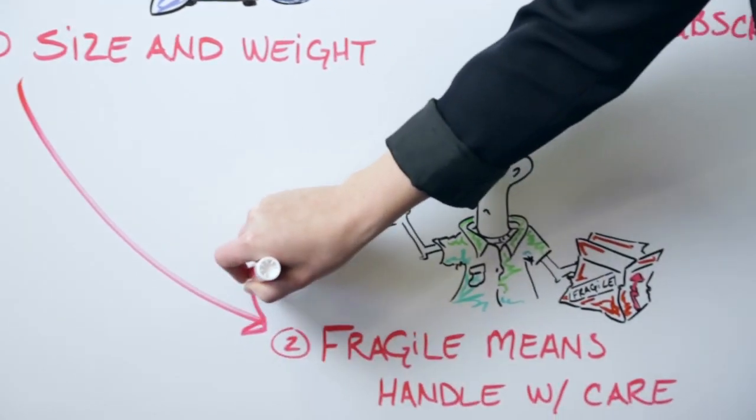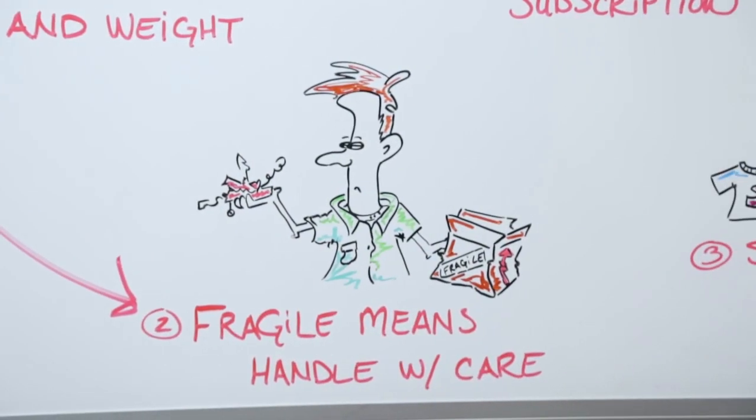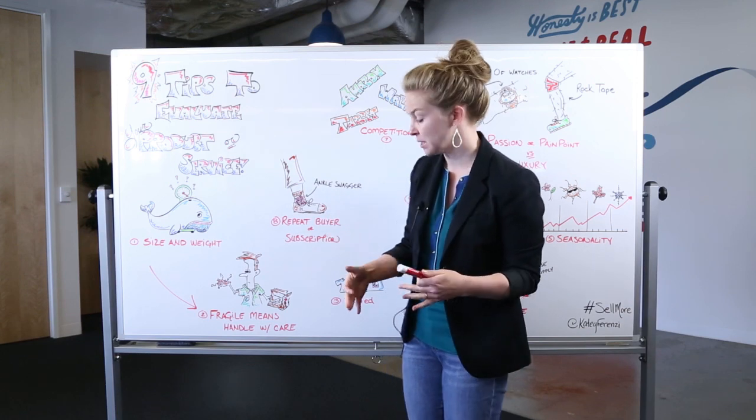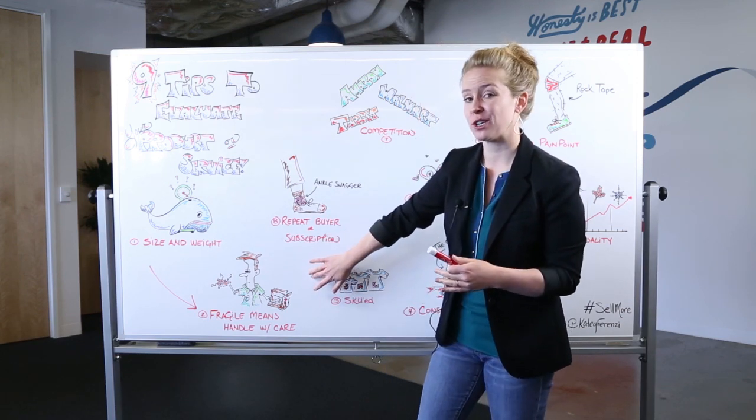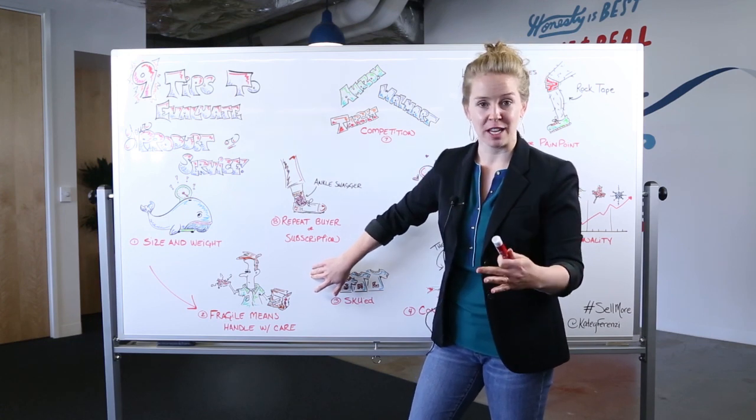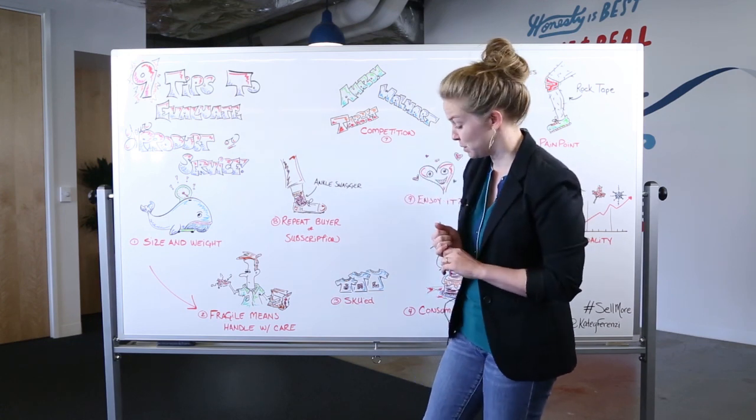Number two, fragile means handle with care, which means consider how much it's going to cost to ship because you've got those extra packing materials. But also if the package doesn't arrive the way that it's supposed to, evaluate that cost and definitely think about what you're going to do to make that situation right for your customer.